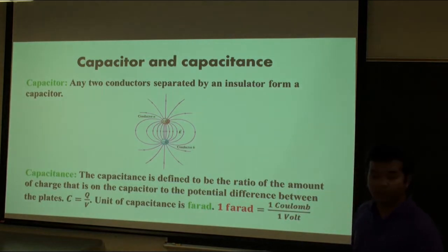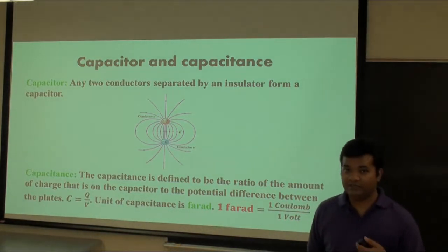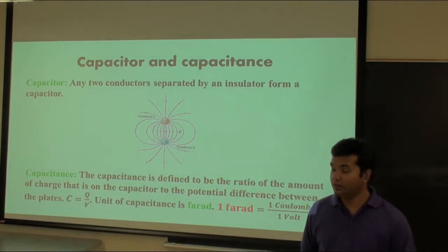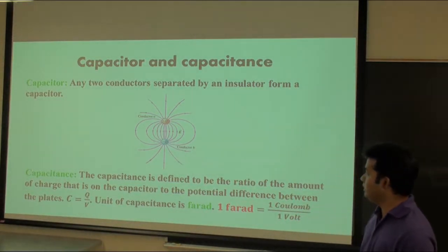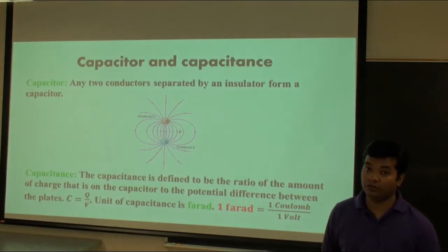The unit of capacitance is Farad. One Farad is equal to one Coulomb over one Volt.